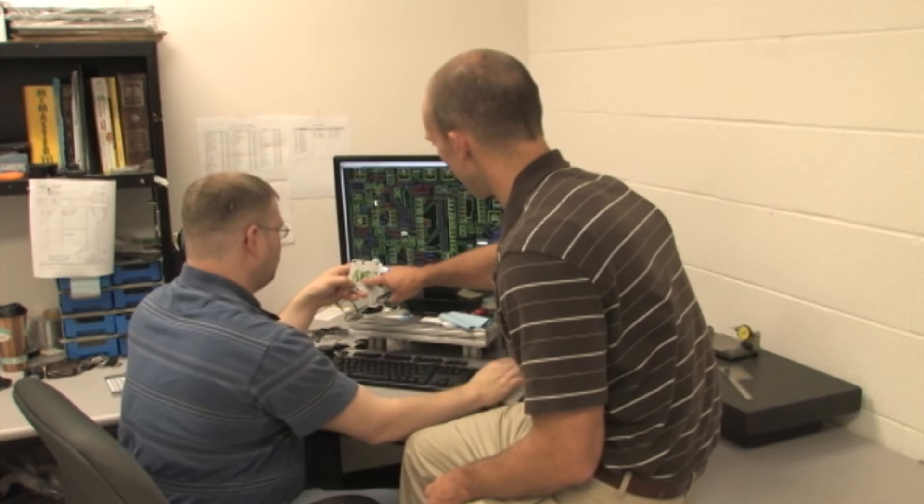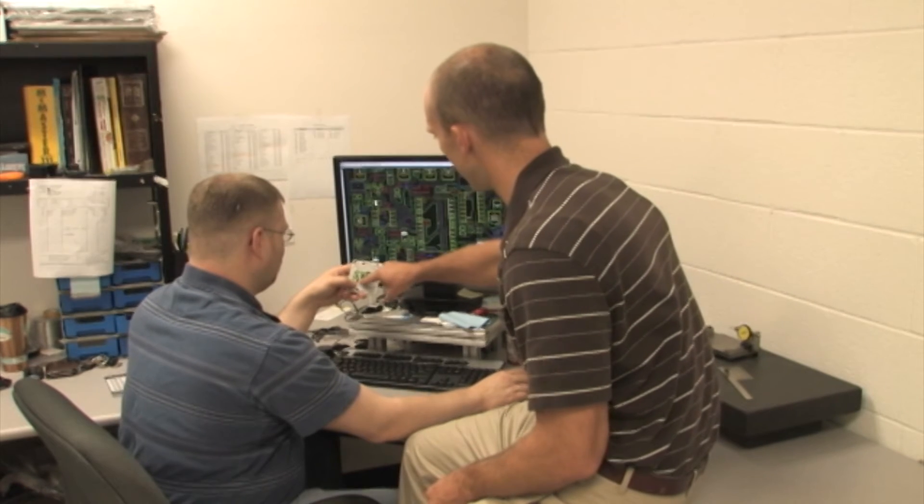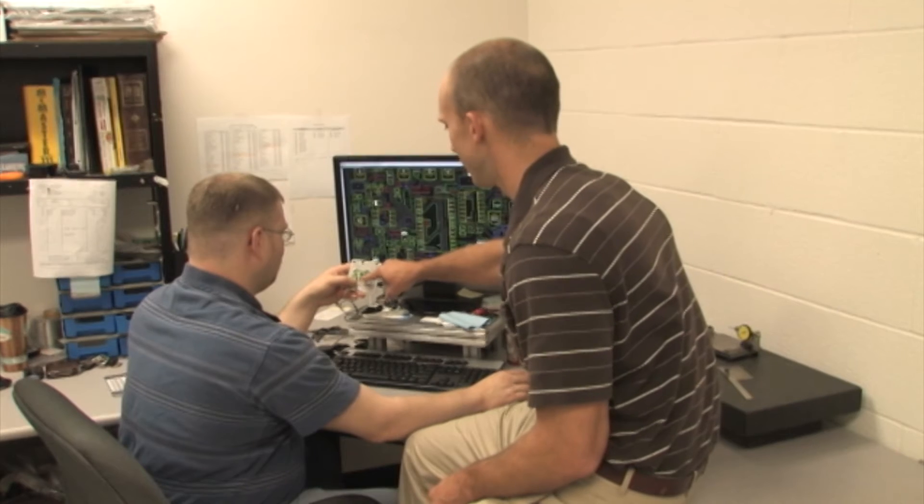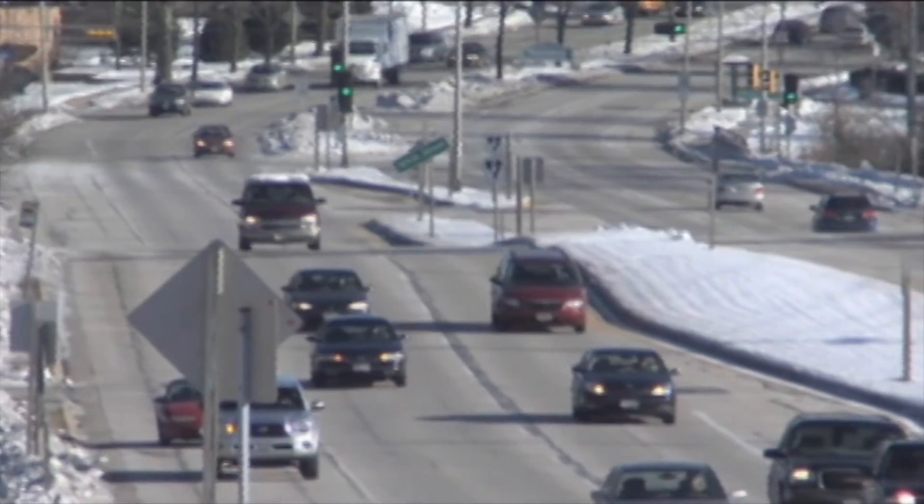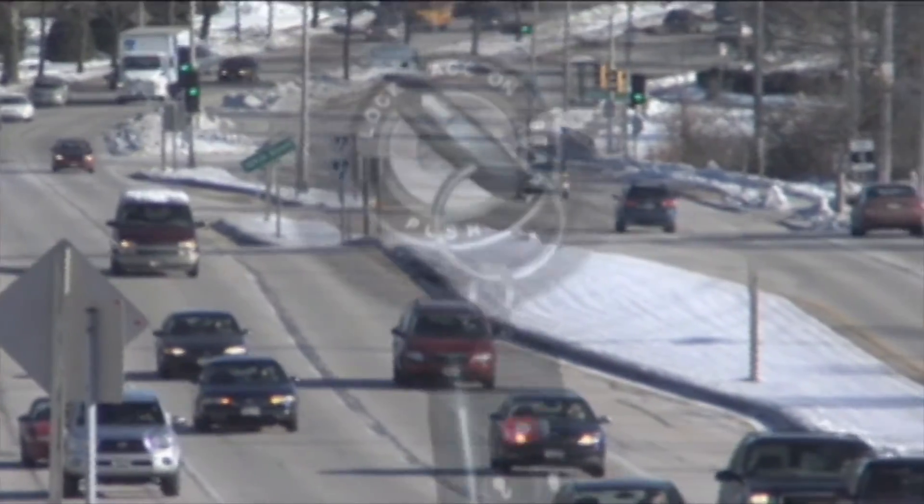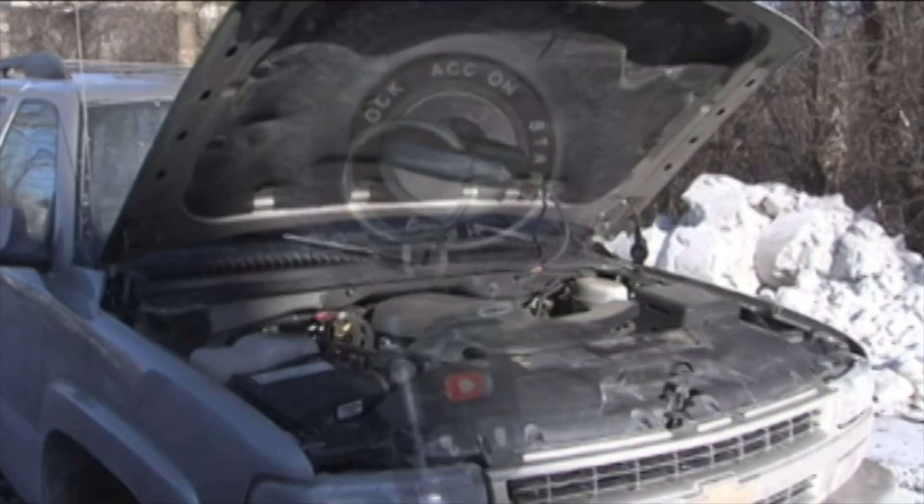Fast Start Circuitry: When you rotate the key in a vehicle equipped with our module, the first coil is fired within one-third of a crankshaft revolution. Without Fast Start Circuitry, two complete revolutions are required to fire the coil. This is a critical advantage during inclement weather.